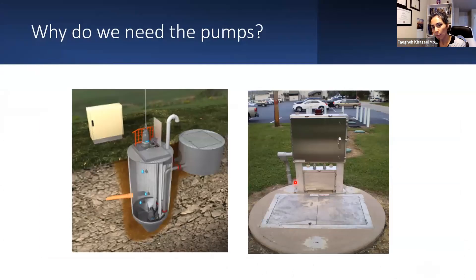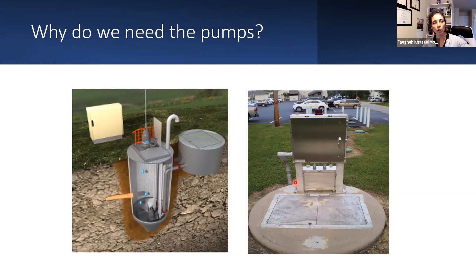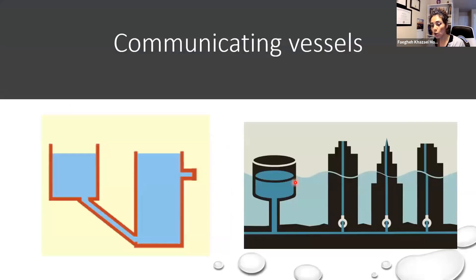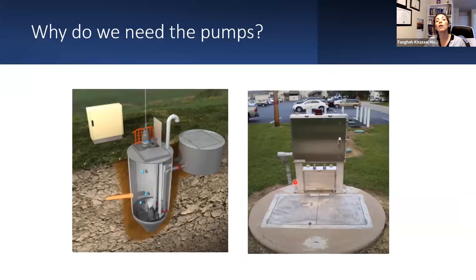Pumps for water systems are similar to the engine of a car. Imagine a world without friction — the only thing you'd need to move your car would be someone pushing it at the driveway. That external force gives acceleration, and without friction the car would run forever. The same is true for water systems: without pipe friction, the level of the tank and communicating vessels would be enough to push water uphill and into tall buildings. But in reality, much of that energy is wasted due to pipe friction, so we need a driving force — like a car engine — to push the water forward.